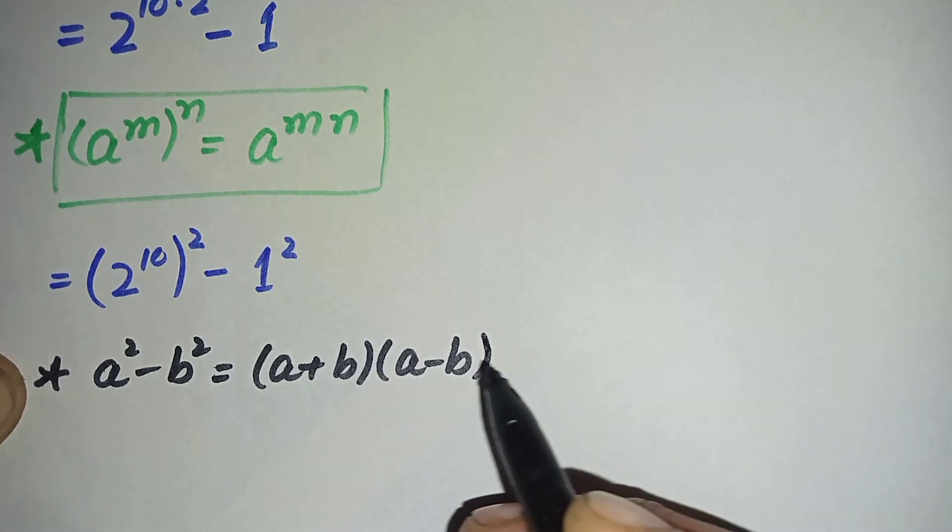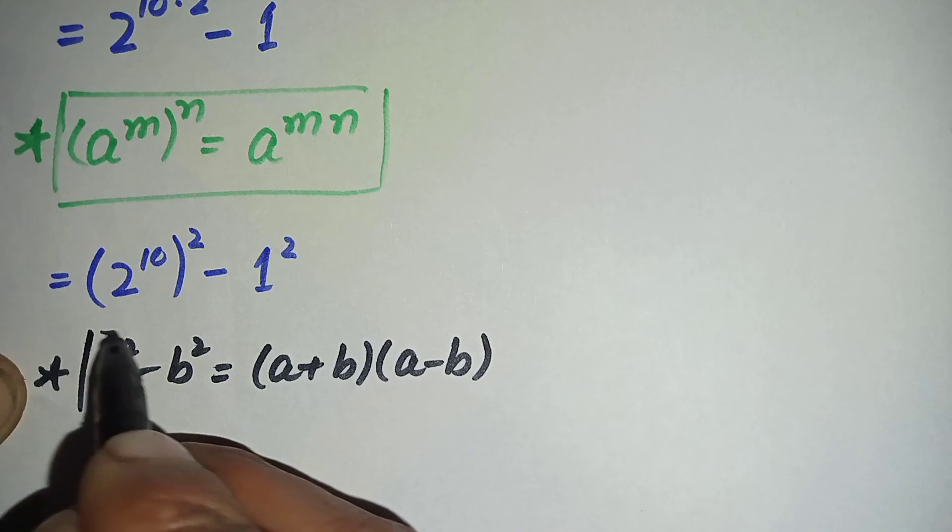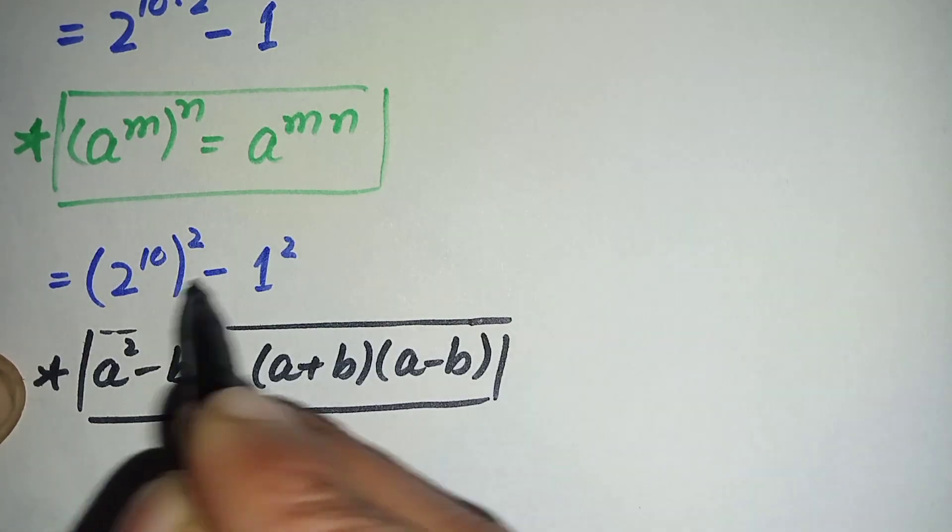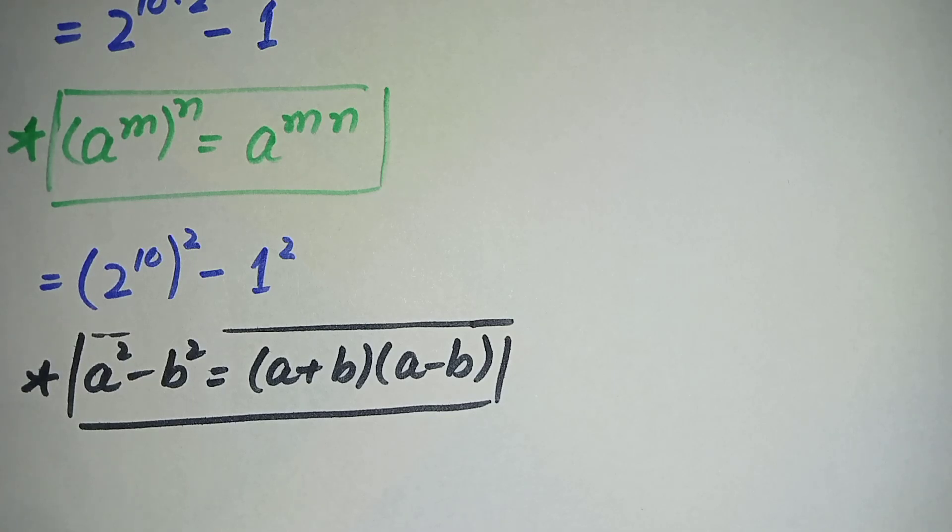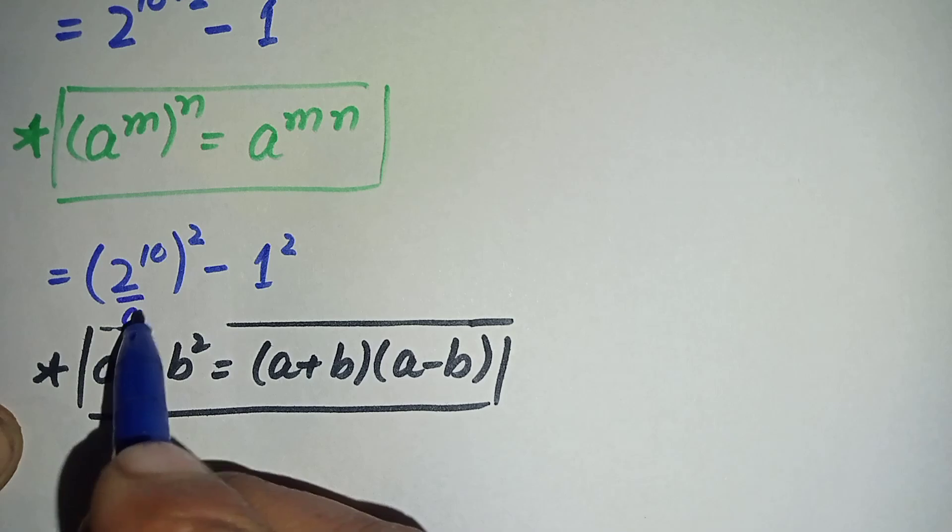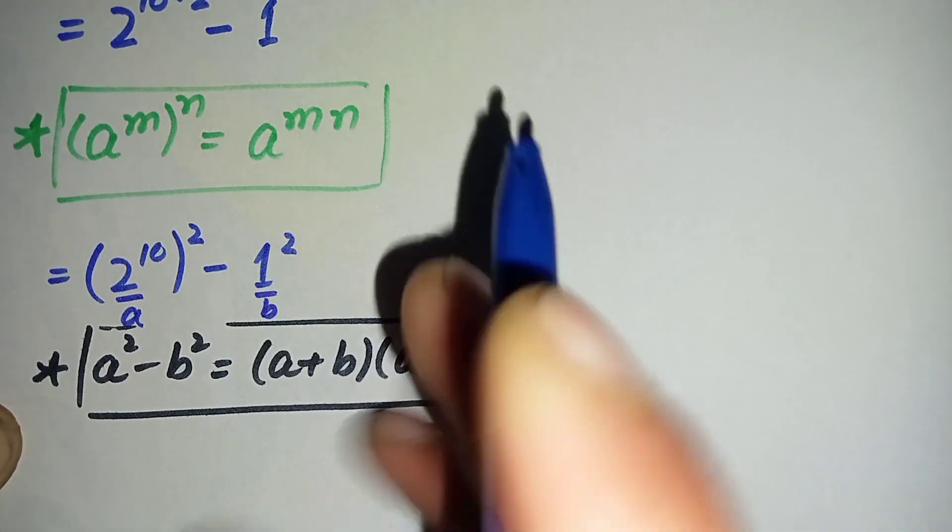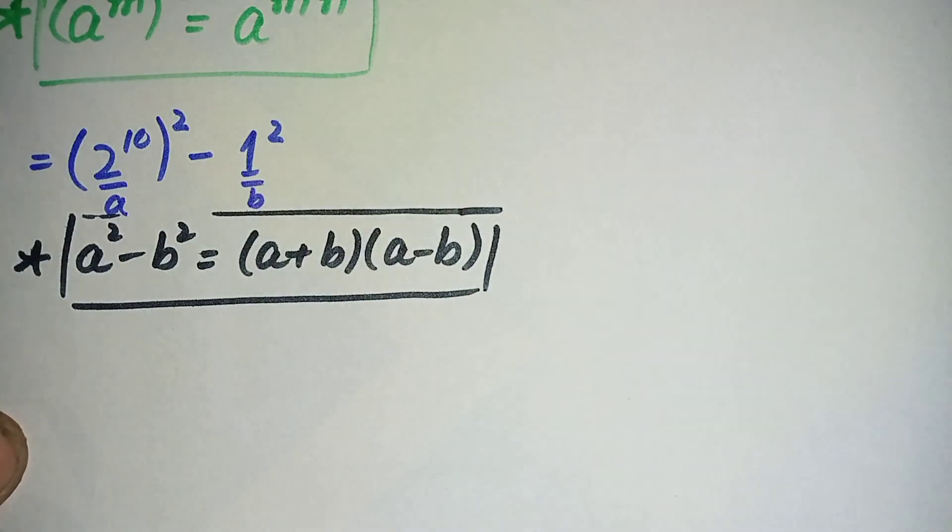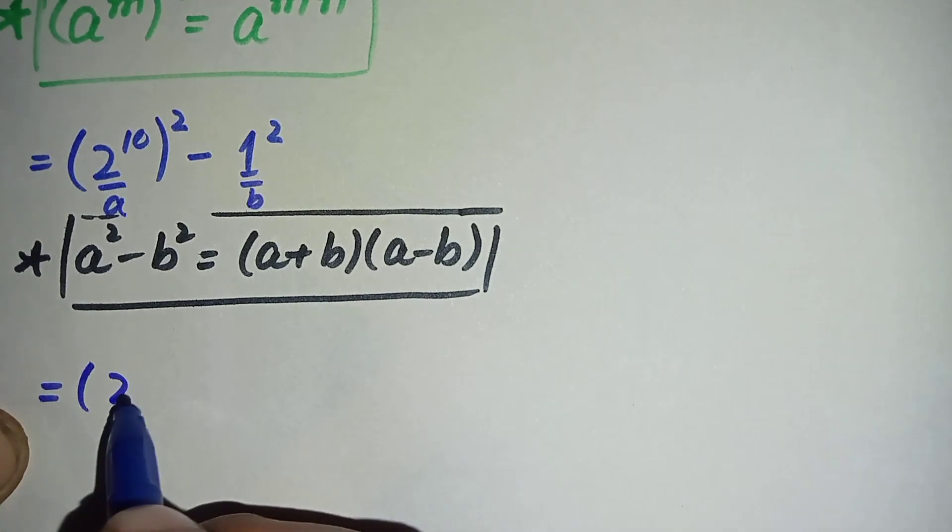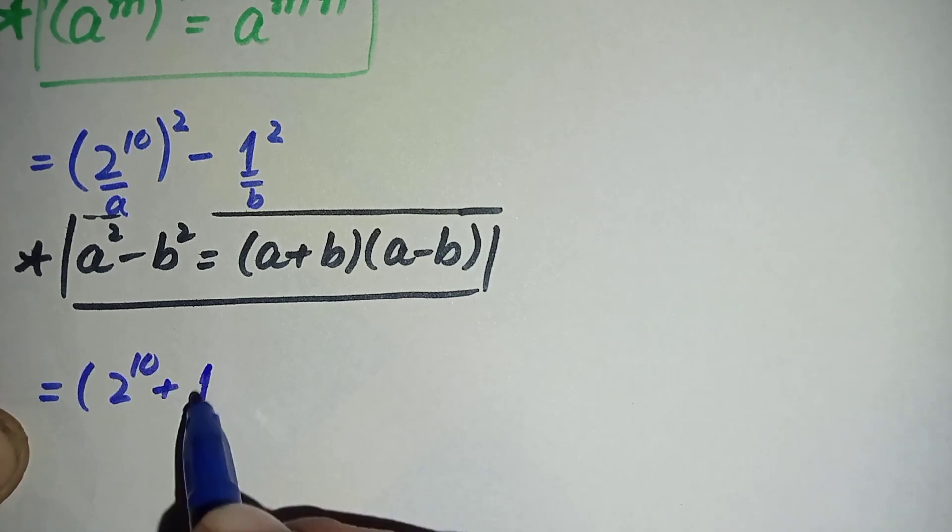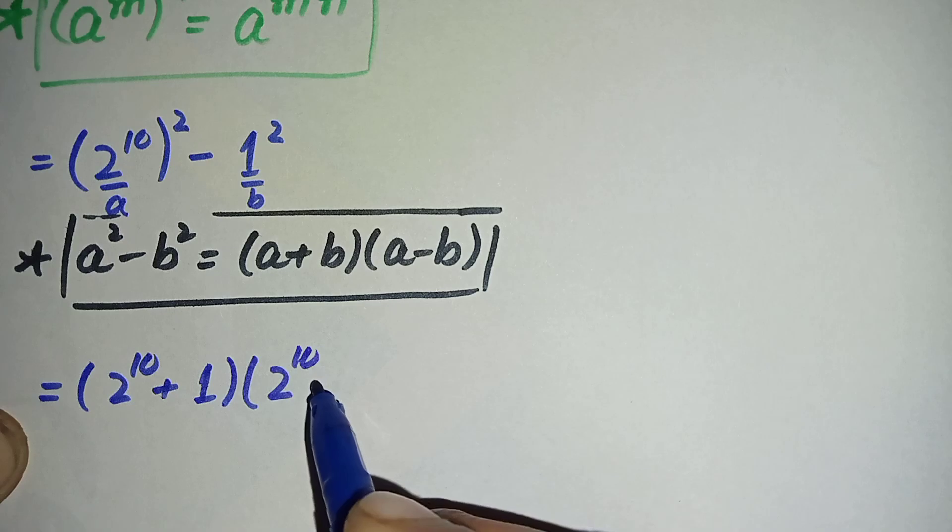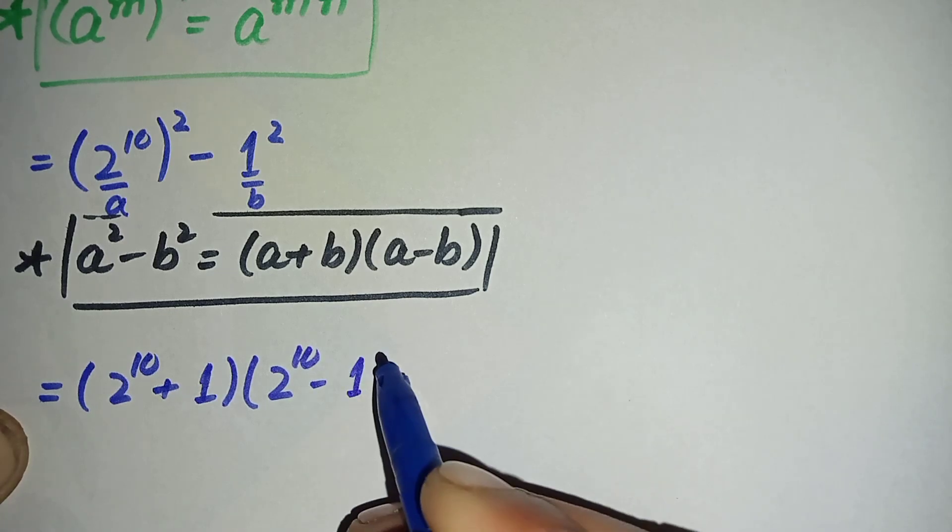So by using this algebraic identity here in this equation, this equation will become: a is 2 raised to power 10 and b is 1. So it will become 2 raised to power 10 plus 1, times 2 raised to power 10 minus 1.